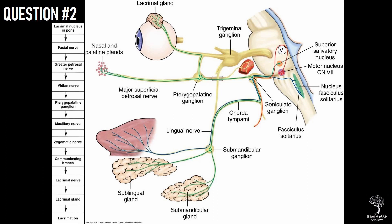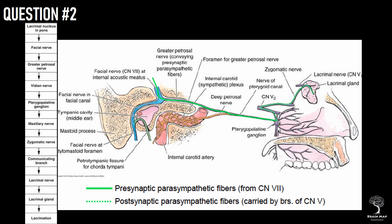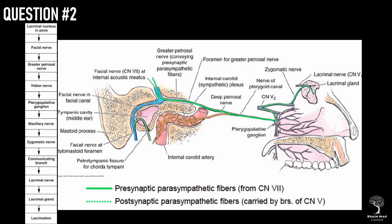At the geniculate ganglion, a branch called the greater petrosal nerve is given off from the nervus intermedius. The greater petrosal nerve joins with the deep petrosal nerve at the pterygoid canal. The deep petrosal nerve carries sympathetic fibers from the superior cervical ganglion which wraps around the internal carotid artery. Together they form the nerve of the pterygoid canal, also called the vidian nerve. The nerve reaches the pterygopalatine fossa, where parasympathetic fibers synapse at the pterygopalatine ganglion but sympathetic fibers pass through without relaying. The efferent fibers go through the zygomatic nerve, then zygomaticotemporal nerve, and finally reach the lacrimal gland through the lacrimal nerve.